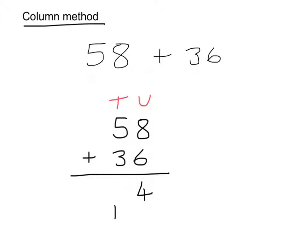Now when I am adding the tens together I have got 5 add 3, but I would also add this one here, giving me an answer of 9, and what we do then is cross out the 1 to show that we have added it. So the answer to 58 add 36 is 94.